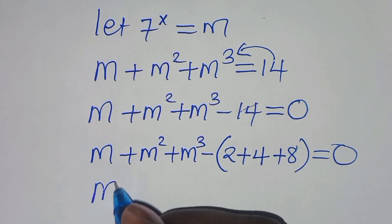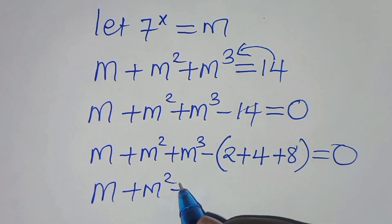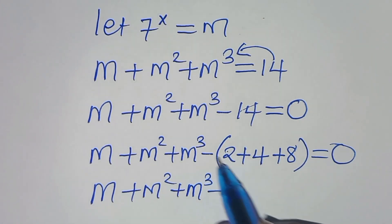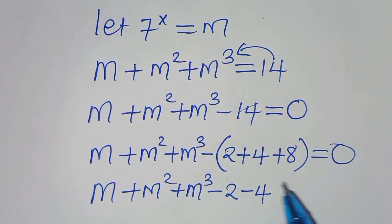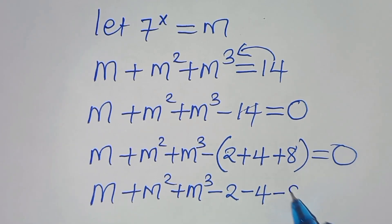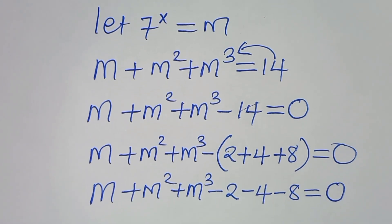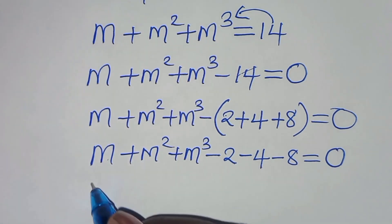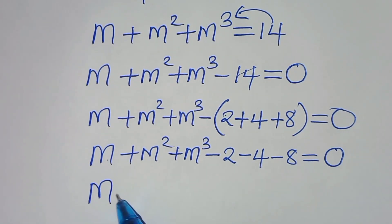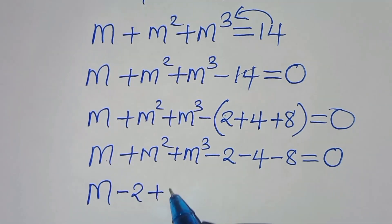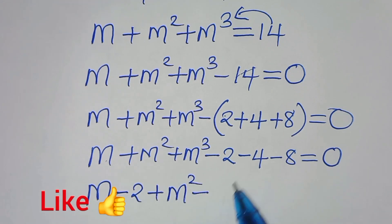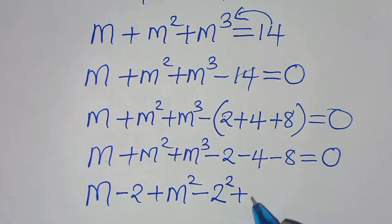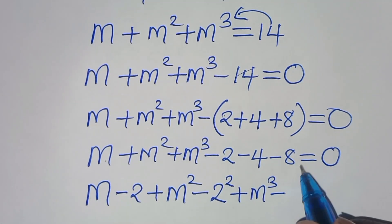So the next step: we have m plus m squared plus m cubed, then subtract 2, minus 4, minus 8, equals 0. We can regroup to get: (m minus 2) plus (m squared minus 4), where 4 is 2 squared, plus (m cubed minus 8), where 8 is 2 cubed, all equal to 0.